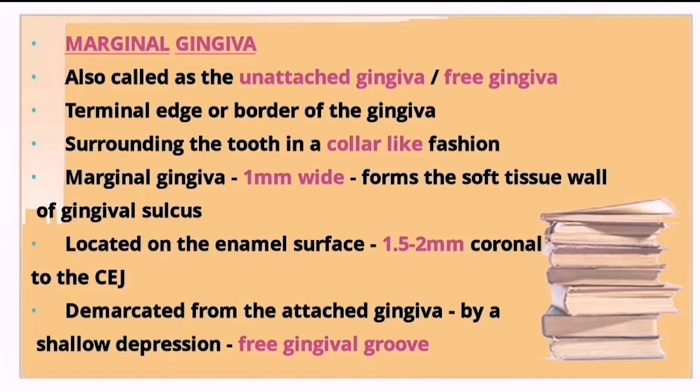Marginal gingiva is also called unattached or free gingiva. It forms the terminal edge or border of the gingiva, surrounding the tooth in a collar-like fashion with a width of around 1 mm. It forms the soft tissue wall of the gingival sulcus and is located on the enamel surface 1.5 to 2 mm coronally to the CEJ.